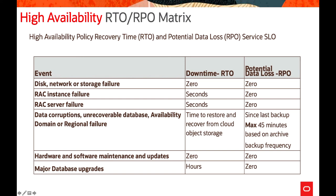For data corruption or unrecoverable database or availability domain failures, the RTO is the time to restore and recover from cloud object storage, and potential data loss is up to the last backup — a maximum of 45 minutes based on archive backup frequency. For hardware and software maintenance and updates, downtime is zero and data loss is zero. For major database upgrades, RTO could be hours with zero data loss.